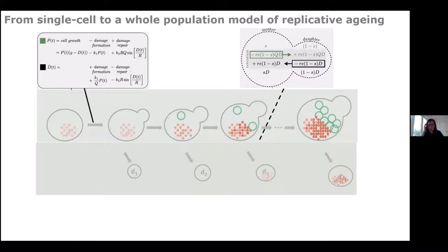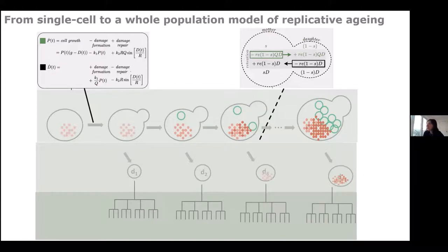Having the single-cell model, the next question was how the aging of an individual cell fits into the aging of the whole population. Previously, population-level perspectives looked at average cells. Now we wanted to properly build from an individual cell to the whole population. Barbara allowed each cell to divide down the lineage tree, and since not all cells are equal, she applied non-linear mixed effect modeling — a tool from pharmacokinetics and pharmacodynamics — to introduce variability.